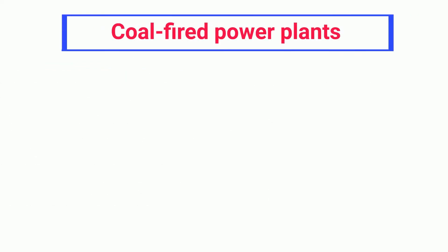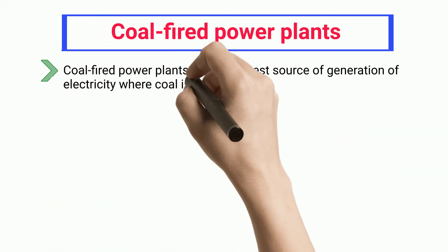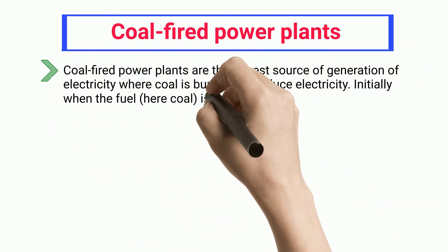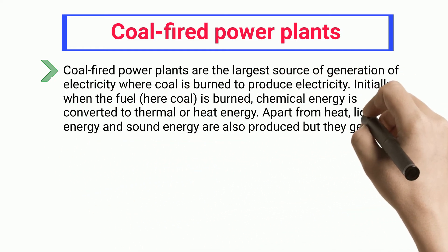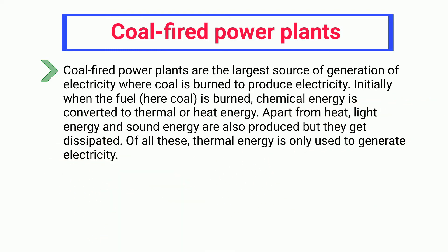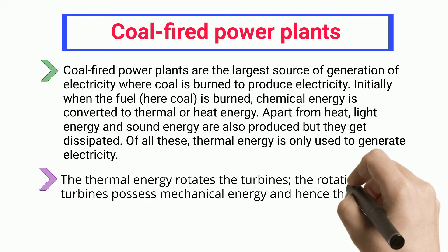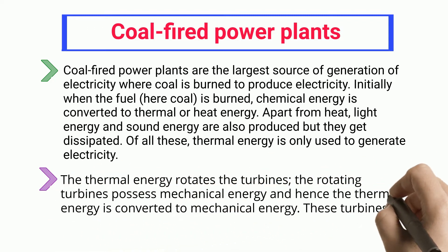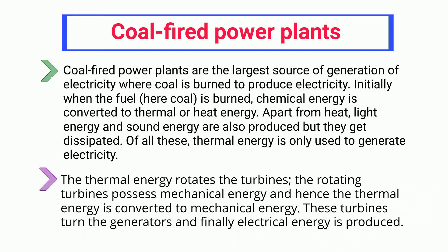Coal-fired power plants are the largest source of generation of electricity, where coal is burned to produce electricity. Initially, when the fuel — here, coal — is burned, chemical energy is converted to thermal or heat energy. Apart from heat, light energy and sound energy are also produced but they get dissipated. Of all these, thermal energy is only used to generate electricity. The thermal energy rotates the turbines; the rotating turbines possess mechanical energy, and hence the thermal energy is converted to mechanical energy. These turbines turn the generators and finally electrical energy is produced.